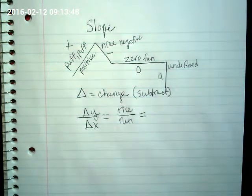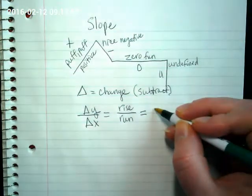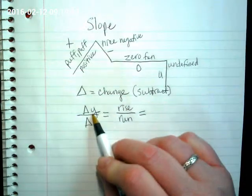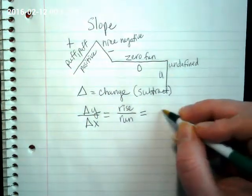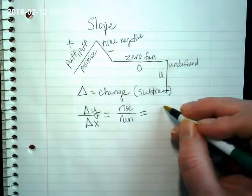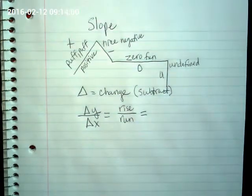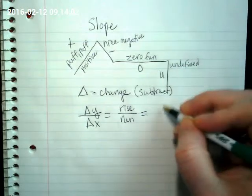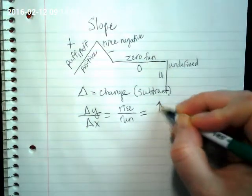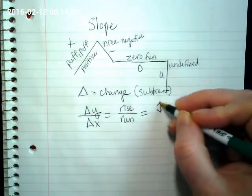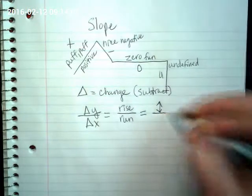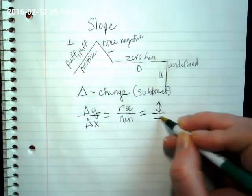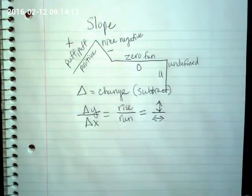They're different ways of writing the same thing, so rise over run is the change in y over the change in x. What direction does the y-axis go? It goes up and down - that's where the rise comes from. We're either going up or down with the rise. And how does the run go, or the x? It goes left or right.